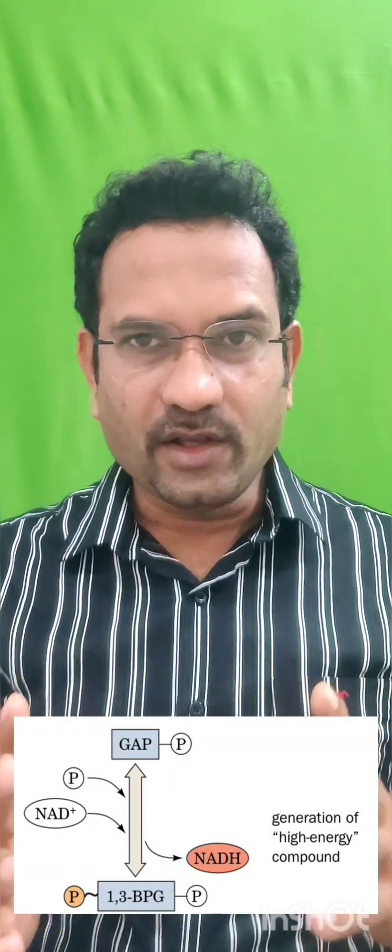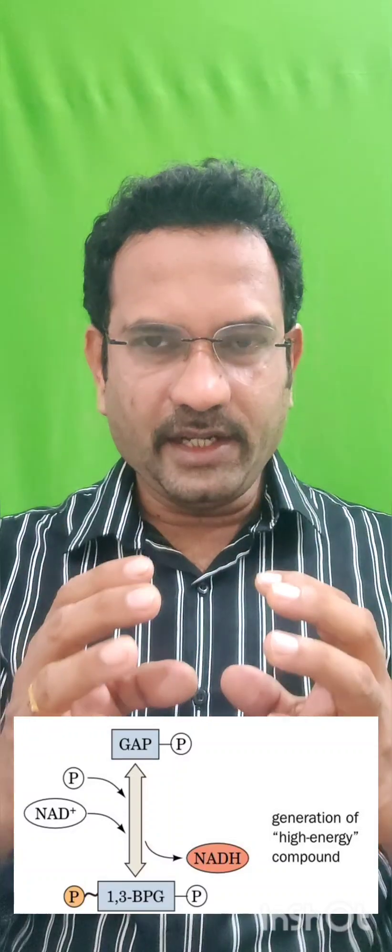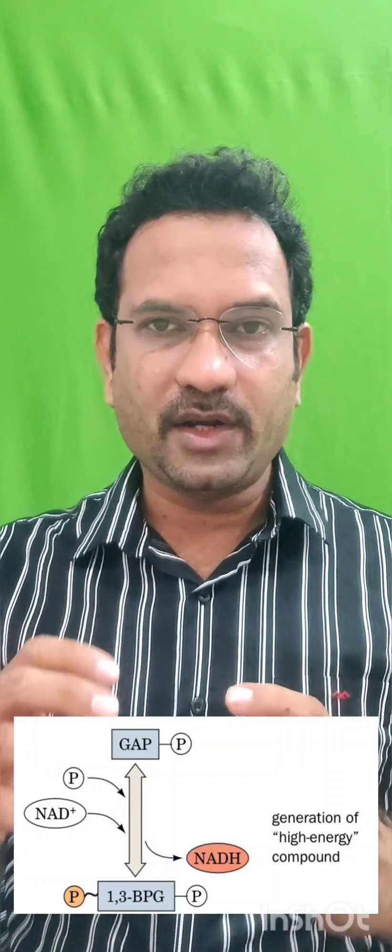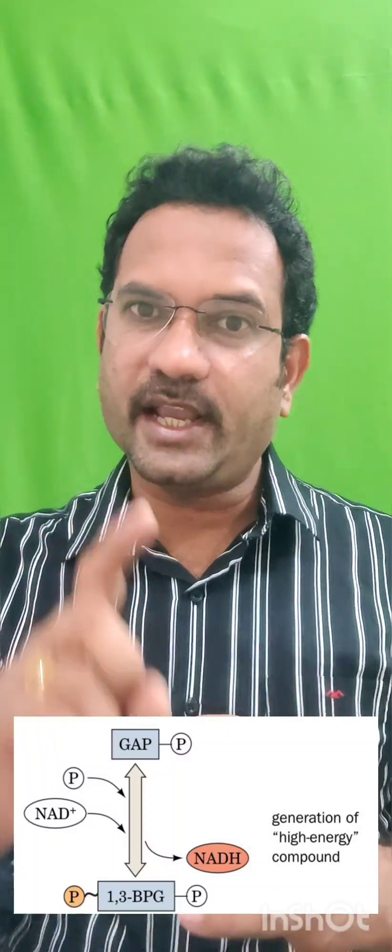In glycolysis under aerobic conditions, there is glucose catabolism producing 2 net ATP at the substrate level — actually 4 ATP produced minus 2 ATP invested. Additionally, glycolysis produces 2 NADH (from glyceraldehyde-3-phosphate to 1,3-bisphosphoglycerate). Under aerobic conditions, these NADH molecules enter the mitochondrial electron transport chain and release ATP, giving 2.5 ATP per NADH.